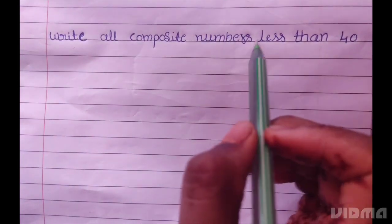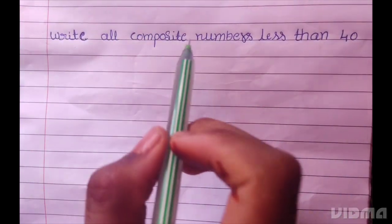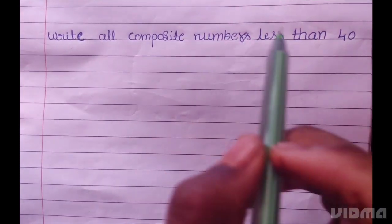Write all composite numbers less than 40. First we have to write numbers 1 to 40.